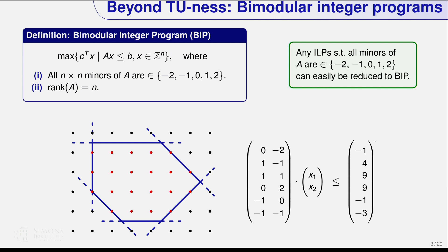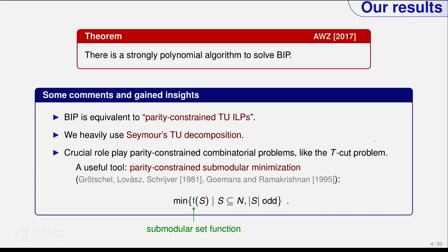The main result I want to show today is that you can solve such bimodular integer programs efficiently, even in strongly polynomial time. The approach is: we reduce the BIP to a TU ILP with an additional parity-type constraint — a conic parity TU problem. Then we use Seymour's TU decomposition to decompose that TU matrix into simpler blocks. A crucial tool is parity-constrained submodular minimization: minimizing a submodular function over all subsets of odd cardinality. This is one of the few classes of constrained submodular minimization we can solve efficiently.